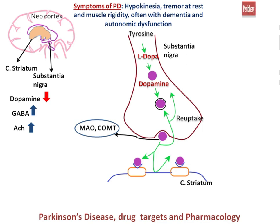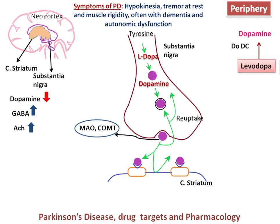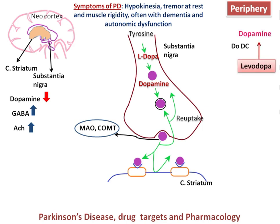There are major drug targets acting in the periphery of the brain. The first drug target is levodopa, which is a first-line category drug for the treatment of Parkinson's disease. In the periphery, levodopa is converted into dopamine with the help of dopa decarboxylase enzyme, and further converted into 3-methoxy dopa with the help of COMT enzyme. The overall efficacy of levodopa alone in the periphery is very low.